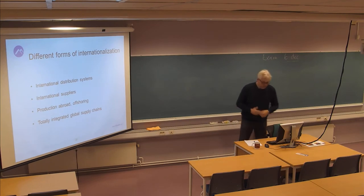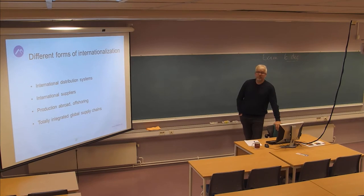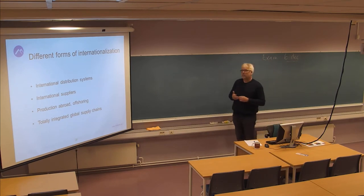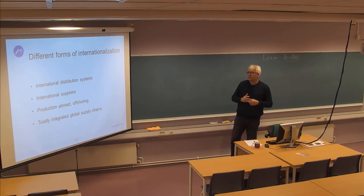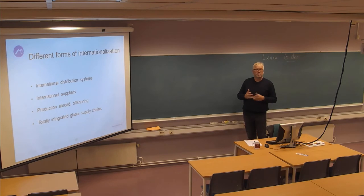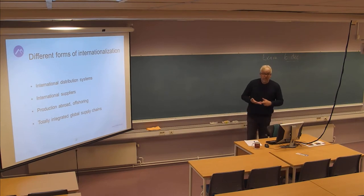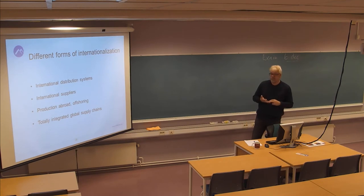We have production abroad, called offshoring, which means companies are setting up production facilities in other countries. We've talked about East Asia, China, Korea, but other places in the world will also come — continents like Africa will be more on the map in terms of production facilities in the years to come. In some cases we get totally integrated global supply chains, where lots of countries are involved in producing commodities and the players are very tightly linked together.